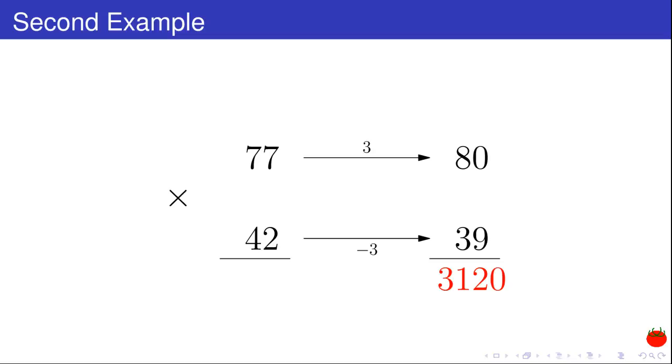It's easy to multiply 80 and 39. I get 3,120. Then I calculate the difference 80 minus 42, and it is equal to 38.